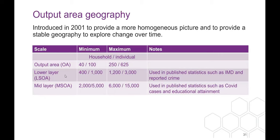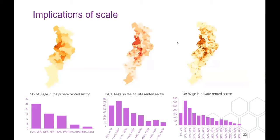Prior to 2001, the census used enumeration districts as the collection base. Output areas are also more stable over time — from 2001 to 2011 and 2011 to 2021, the target was fewer than 5% changes in output areas, and that's been achieved. Output areas are then grouped up into Lower Layer Super Output Areas (LSOAs), used in a range of published statistics including the Index of Multiple Deprivation. Crime is held at LSOA level. The largest grouping is the Middle Layer Super Output Area (MSOA), used in statistics such as COVID cases and educational attainment.